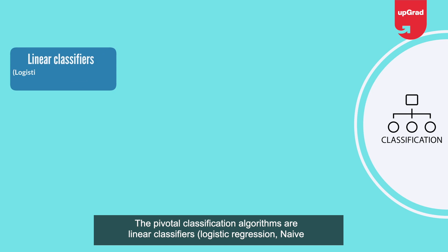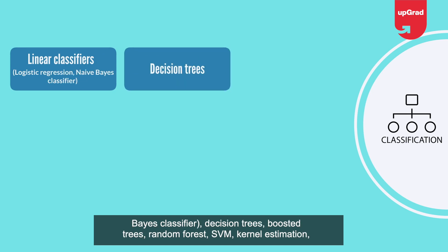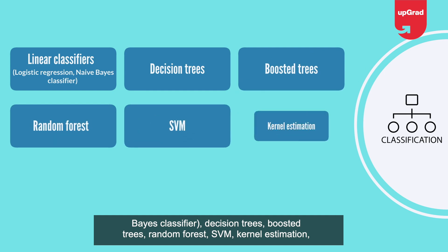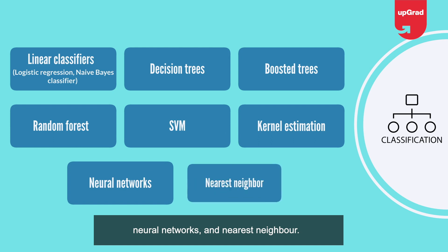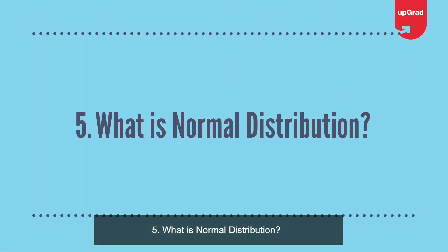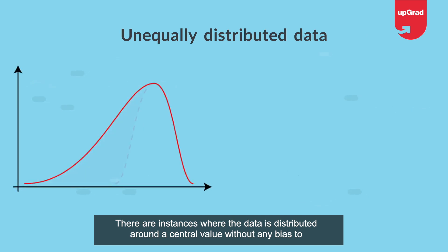Question 4: What are the different classification algorithms? The pivotal classification algorithms are linear classifiers, logistic regression, naive Bayes classifier, decision trees, boosted trees, random forests, SVM, kernel estimation, neural networks, and nearest neighbor.